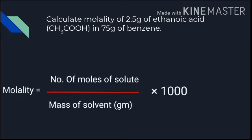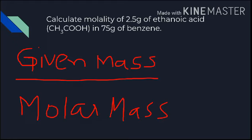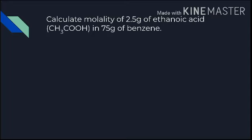First, calculate the number of moles of ethanoic acid: given mass / molar mass. Molar mass of ethanoic acid (CH₃COOH): 2 carbon atoms, 4 hydrogen atoms, and 2 oxygen atoms — adding all atomic masses gives 60. So number of moles = 2.5 / 60. Now put this into the molality formula: molality = number of moles / (75 × 1000). This gives the molality of ethanoic acid.